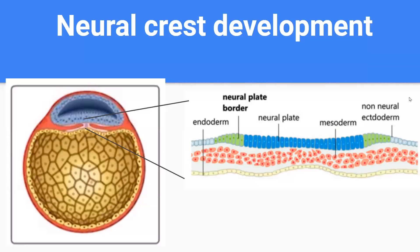One such group of cells are neural crest cells. Before going forward, however, I would like to give a little background on where these cells come from and how they develop.